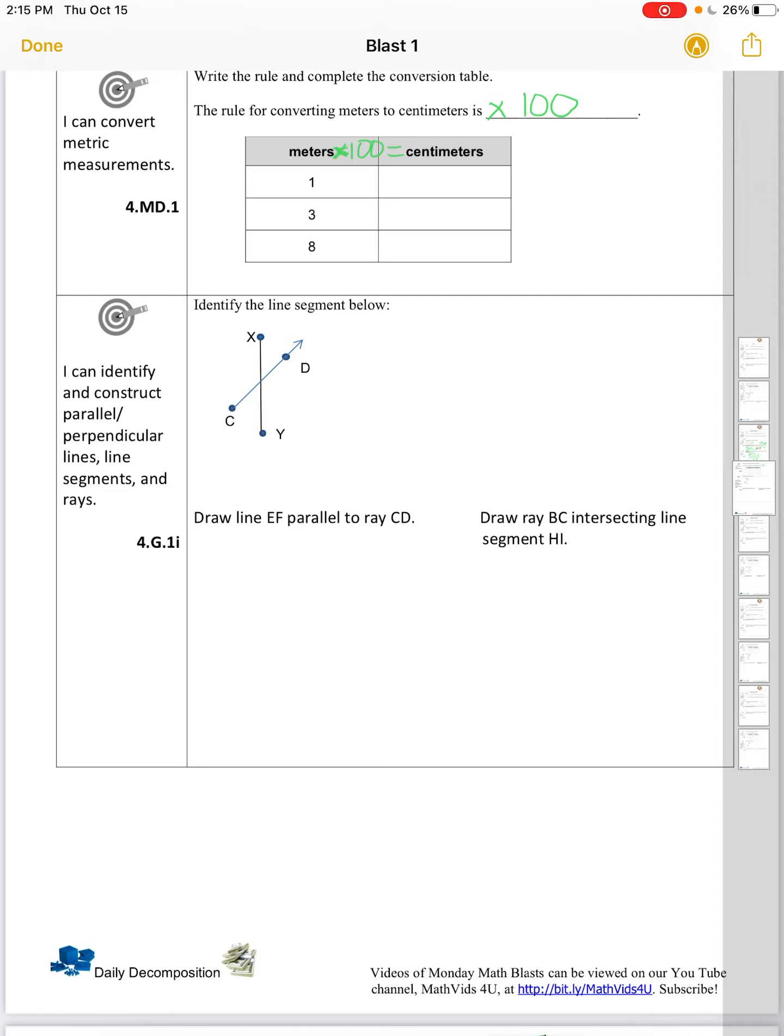Again, meters times 100 is equal to centimeters. So 1 times 100 is 100. 3 meters times 100 is 300 centimeters. 8 meters times 100 is 800 centimeters.